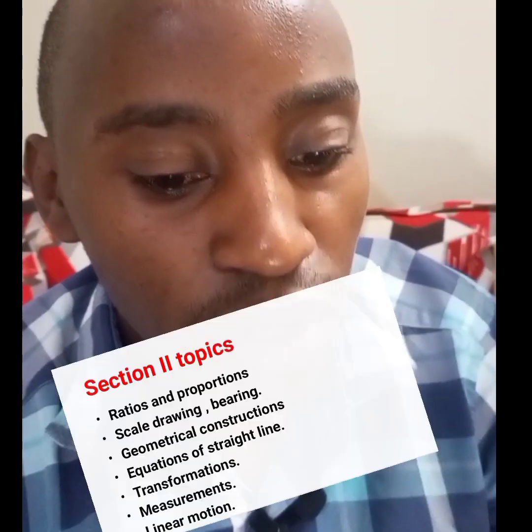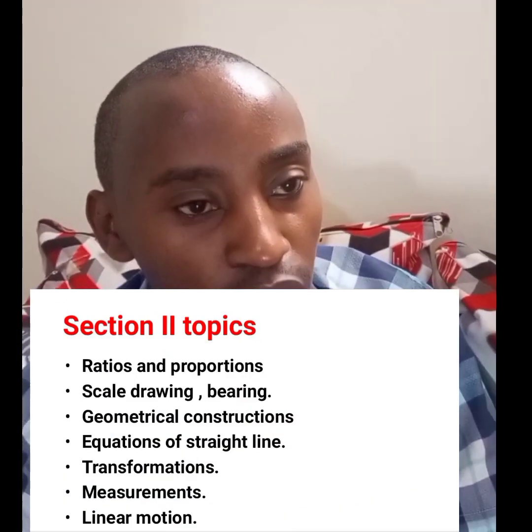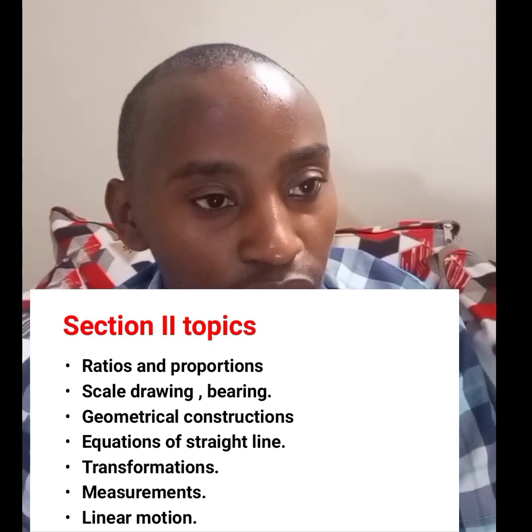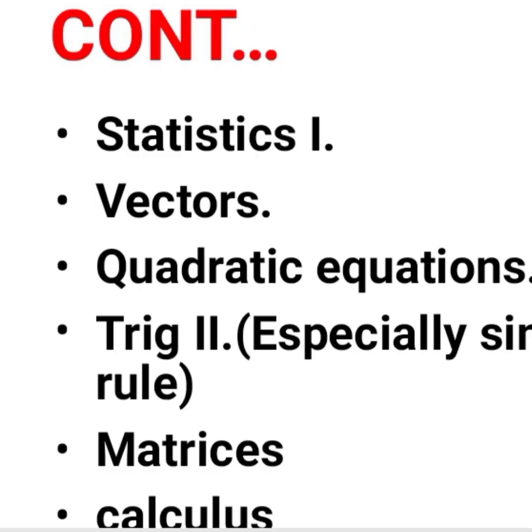In section 2 we expect the following topics: ratio and proportion, scale drawing (e.g. bearing), geometric construction, equation of a straight line, transformation, measurement, and linear motion. We also expect statistics 1, vectors 1, quadratic equations, trigonometry 2 (especially the sine and cosine rule), matrices, and calculus.